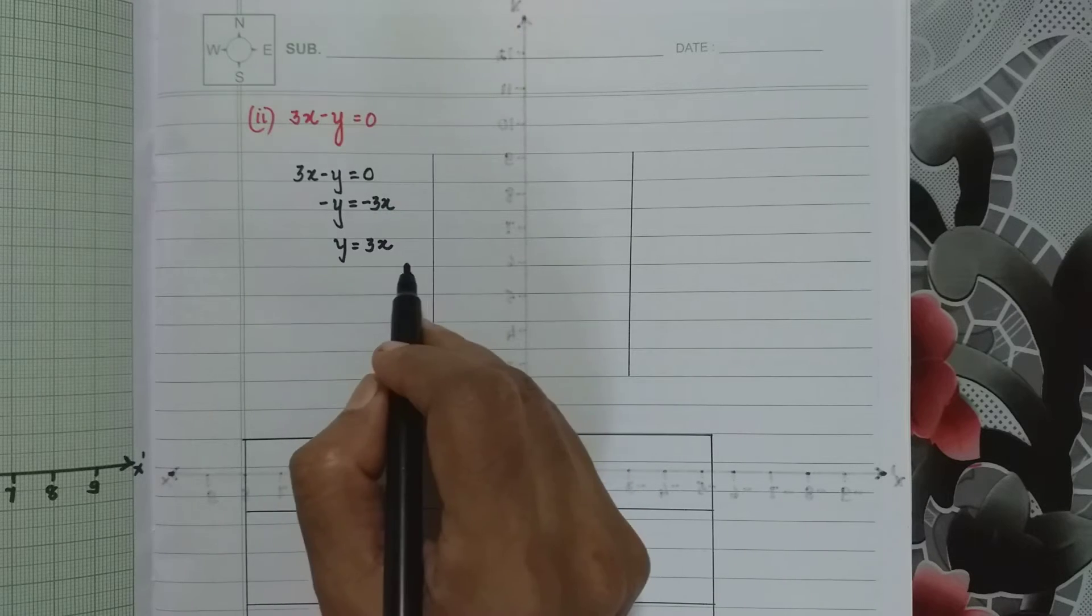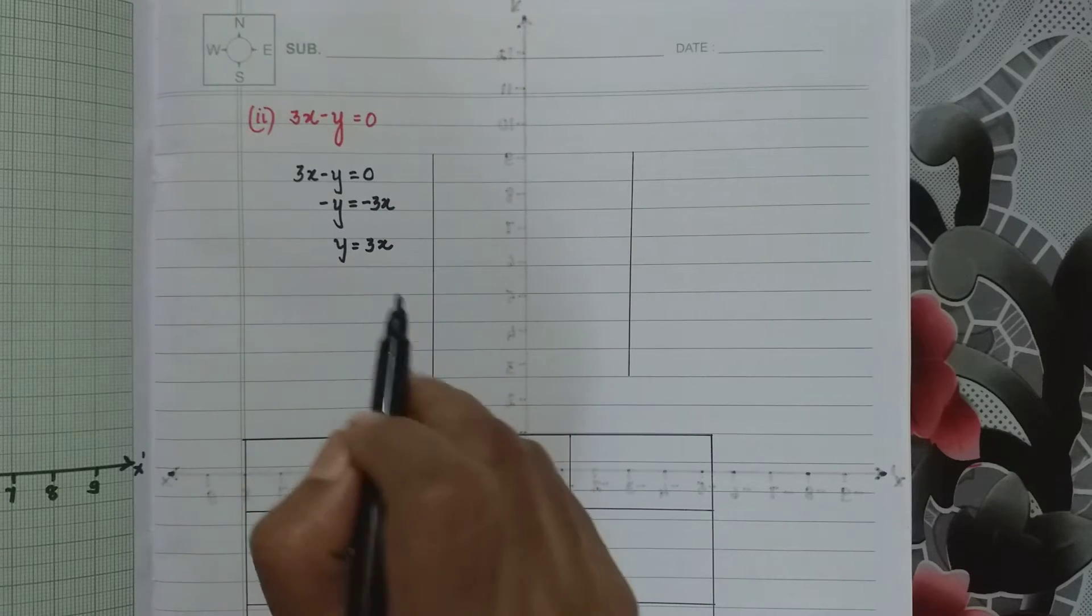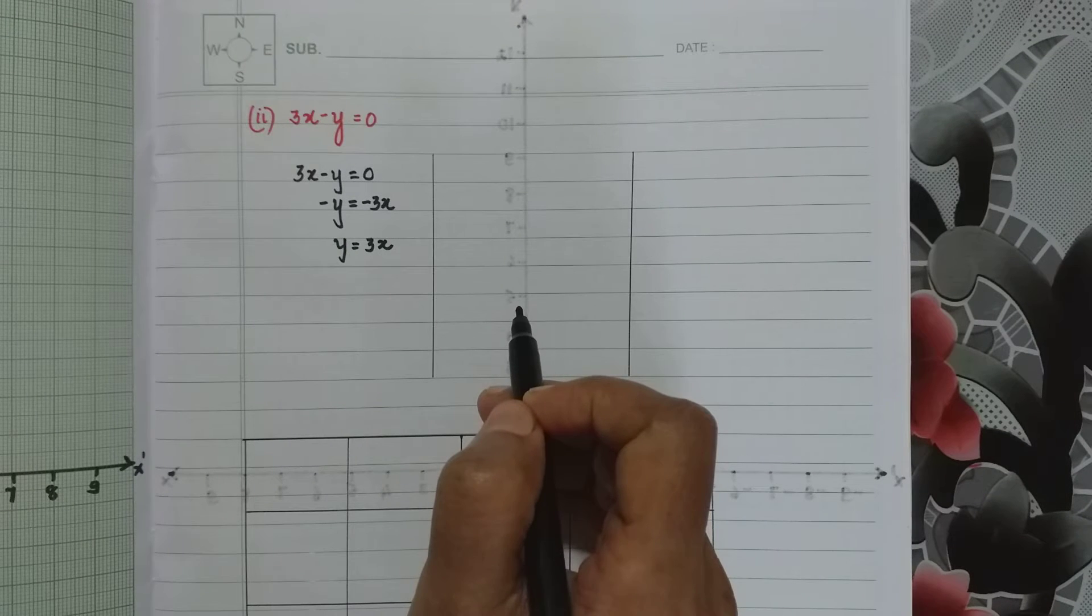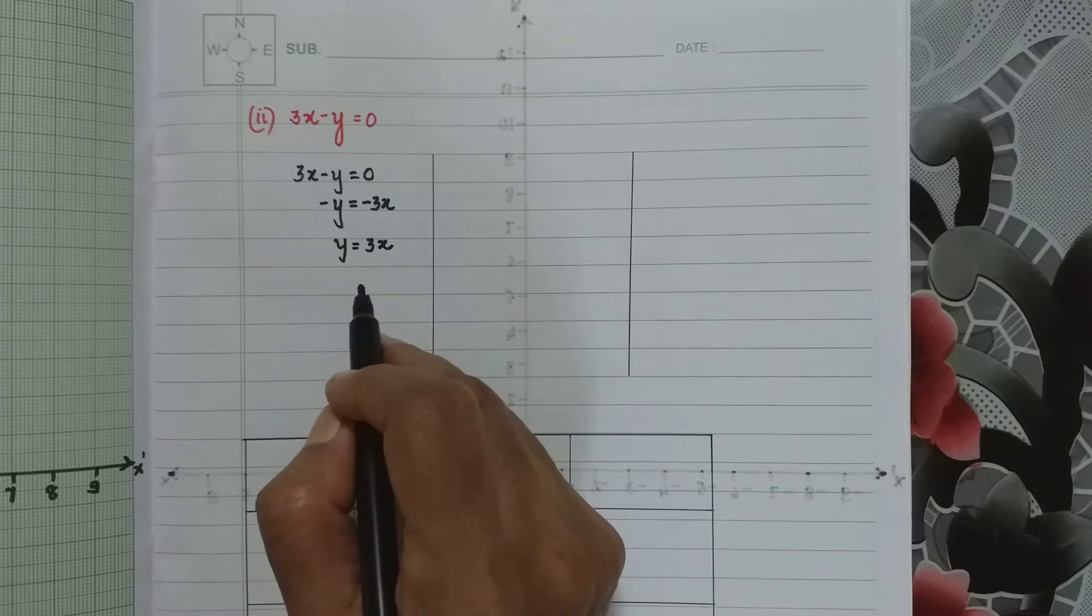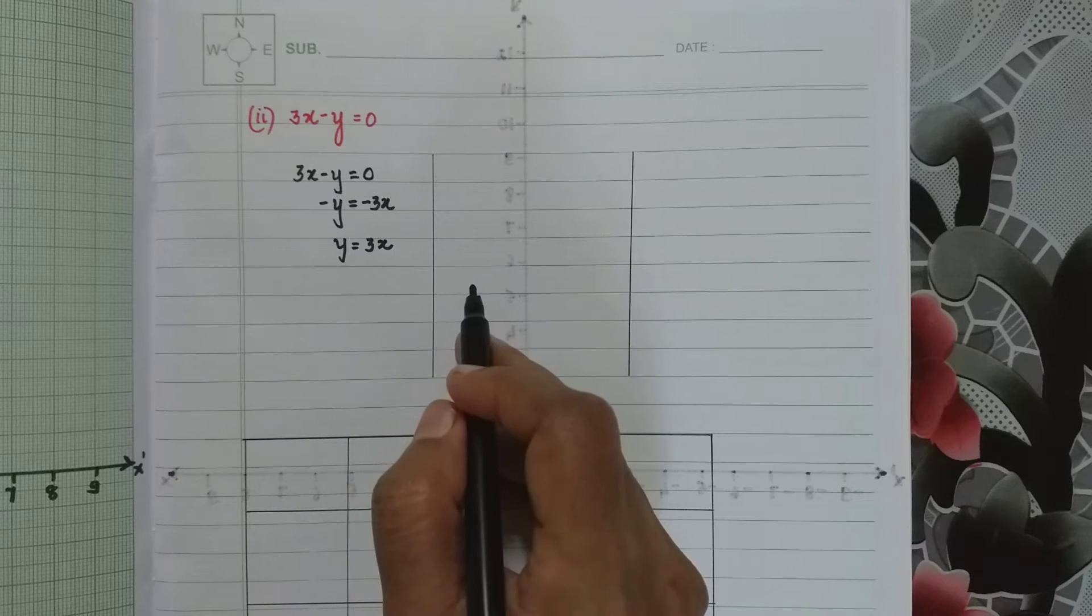Now we start putting values for x and then find the corresponding value of y. As I told you in the previous sub-question, we will put one positive value, one 0, and lastly the negative value.